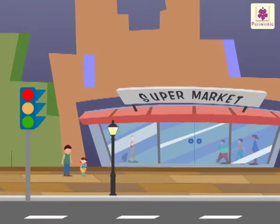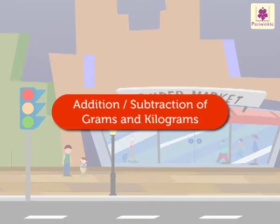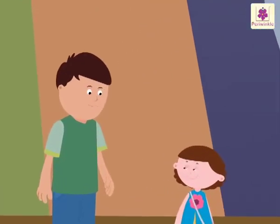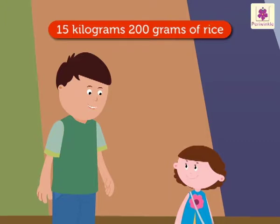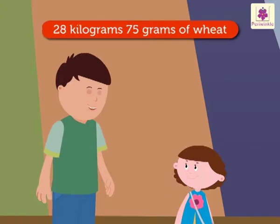Today, let's revise addition and subtraction of grams and kilograms with Mary and her dad at the supermarket. We have to buy 15 kilograms 200 grams of rice and 28 kilograms 75 grams of wheat.